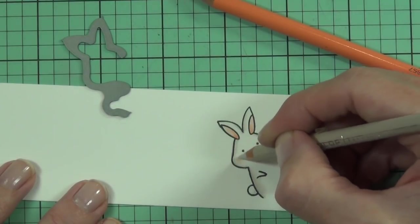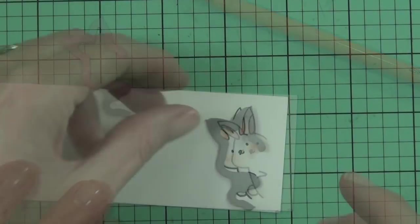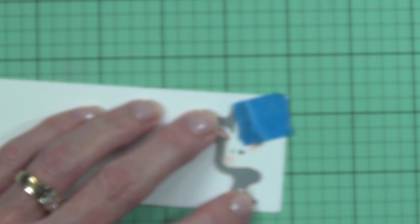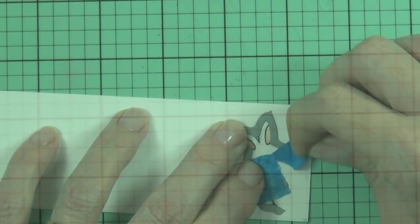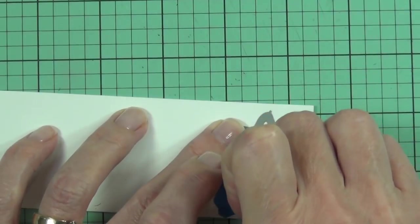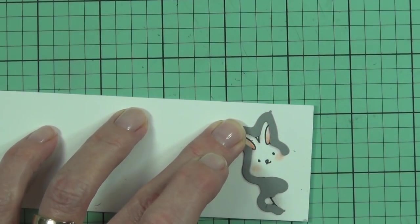These critters from Waffle Flower Crafts are so cute and really easy to color too. So this is the matching die that I was talking about, and it doesn't cut the whole image out because it is kind of maybe one of those border images. So I'll just run that through my die cutting machine—it's just on the normal setting for a thin die.